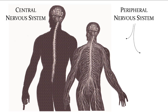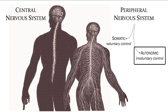The somatic nervous system targets the skeletal muscles of our body, exerting voluntary control of our movement. The autonomic nervous system is entirely involuntary, controlling our organs and tissues such as the intestines, heart, and sweat glands.